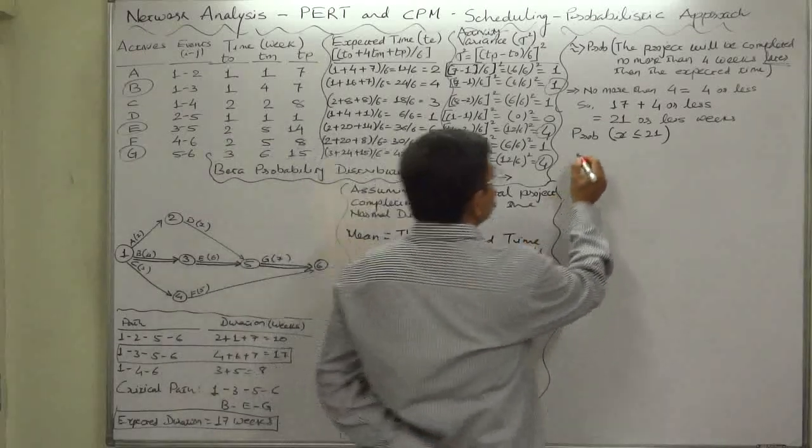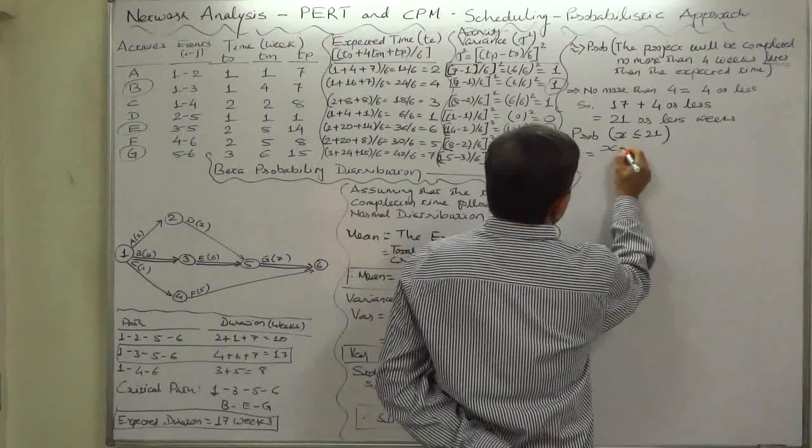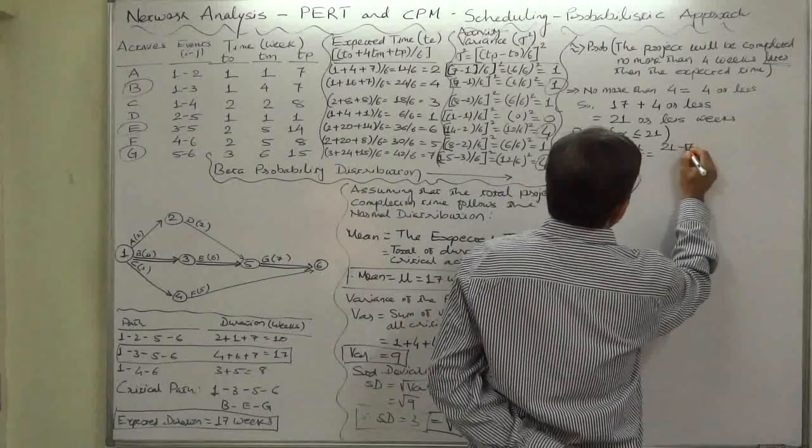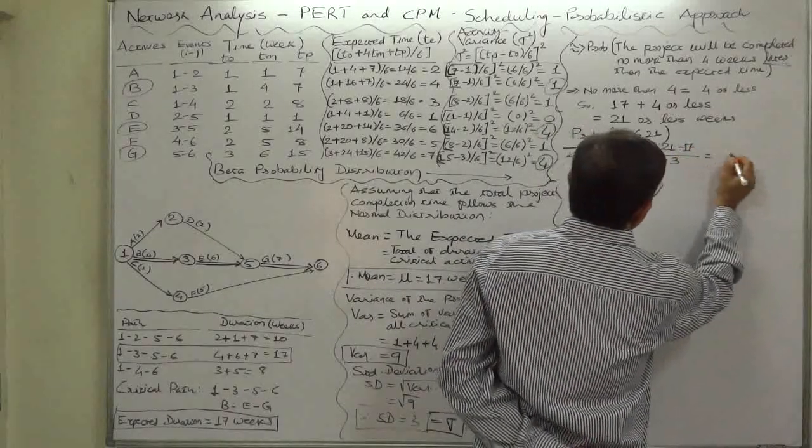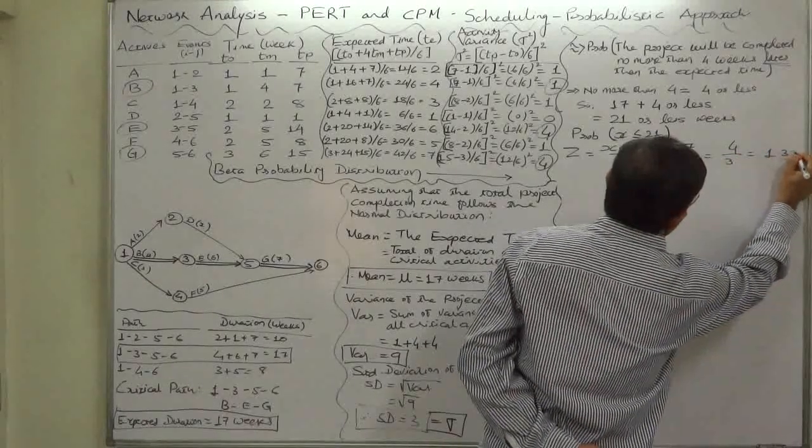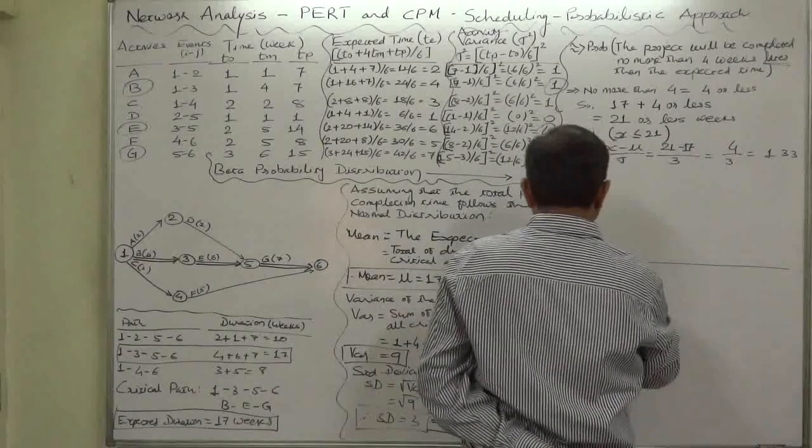Let's calculate z. Z equals x minus mean upon standard deviation, that will be 21 minus 17 upon standard deviation 3, which is positive 4 upon 3. So z comes to positive 1.33. Let's draw the sketch.